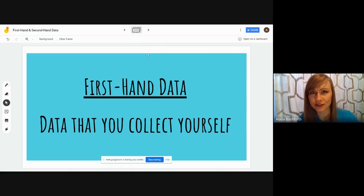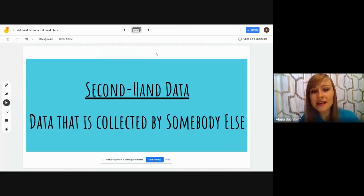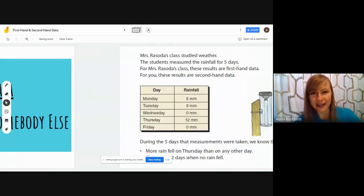First-hand data we do it ourselves. Second-hand data is data that's collected by somebody else. Just think about it as like a second person, not you. This could be another teacher or another class collecting data and then giving it to us, or it could be like the Canadian government collecting data or the World Health Organization collecting data. If you didn't collect it, then it's second-hand data.